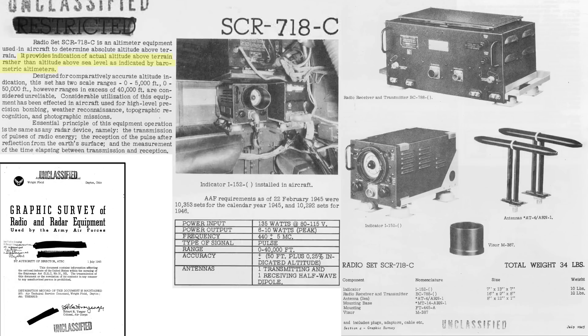The system provides the absolute altitude to the aircrew rather than altitude by barometric pressure. The system is unreliable at altitudes over 40,000 feet. The distance to the ground is found by radar: a radio energy pulse is sent down and reflected back to the plane, and the time lapse between the pulse transmitted and received is used to calculate the distance.